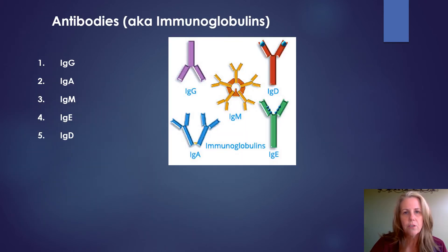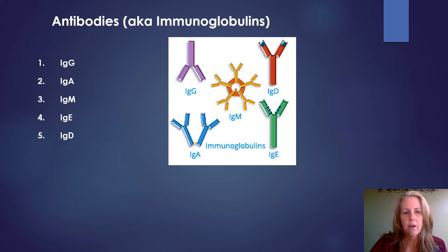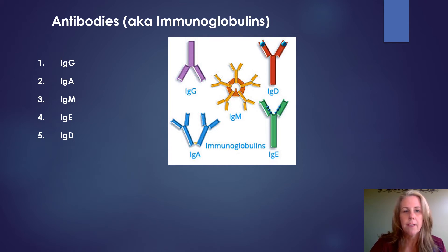Taking a closer look at antibodies — the more proper term is immunoglobulins. There are five classes of immunoglobulins or antibodies. That traditional Y shape for that protein — all of the classes are built around that base Y shape. You'll see from the picture that each class looks a little bit different, and some of them are much larger than others.